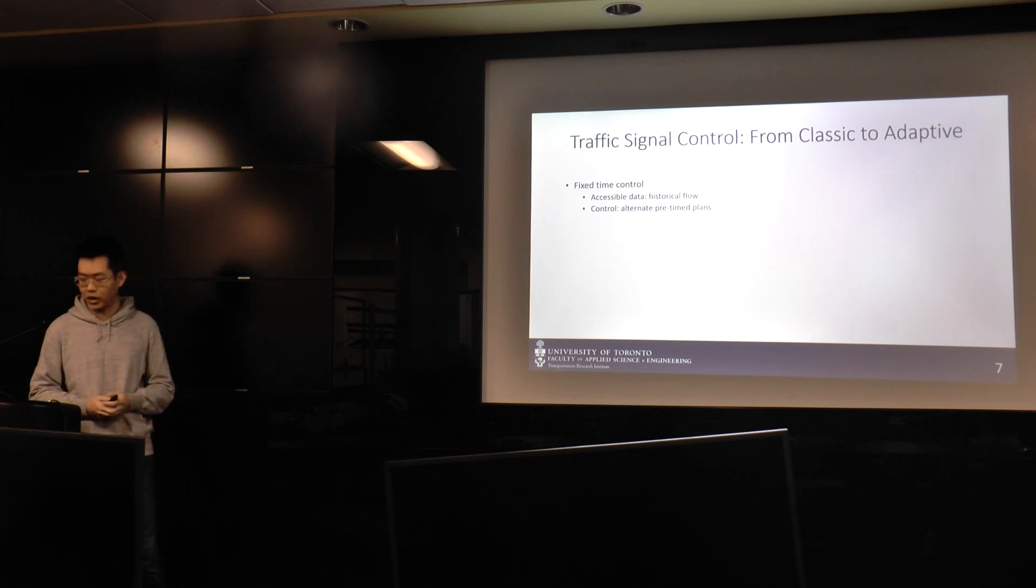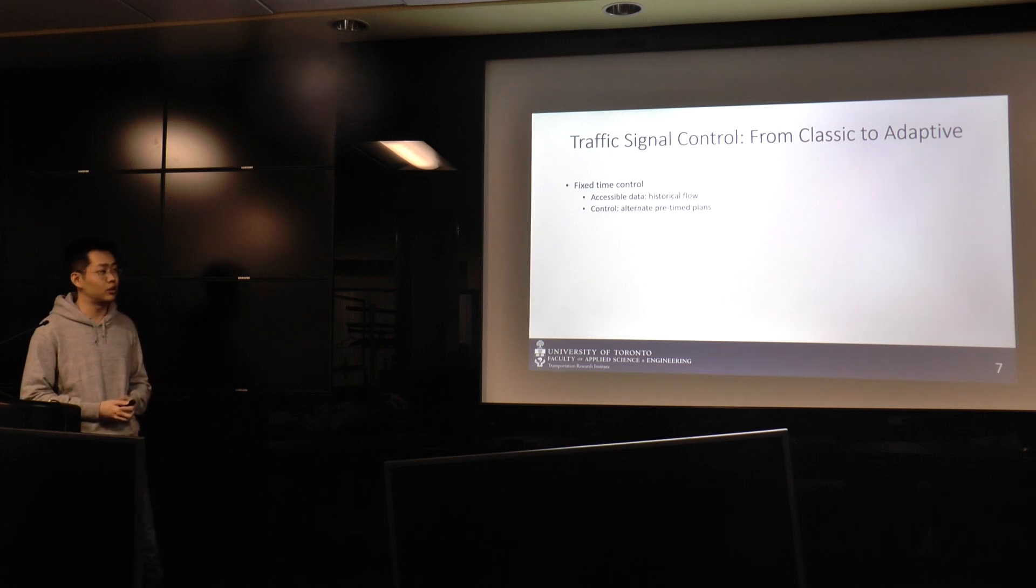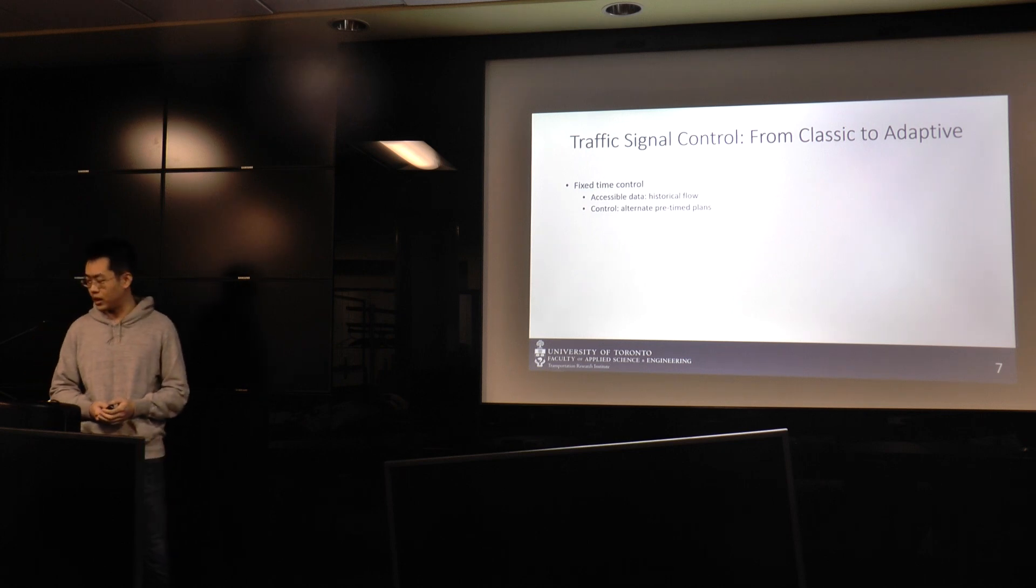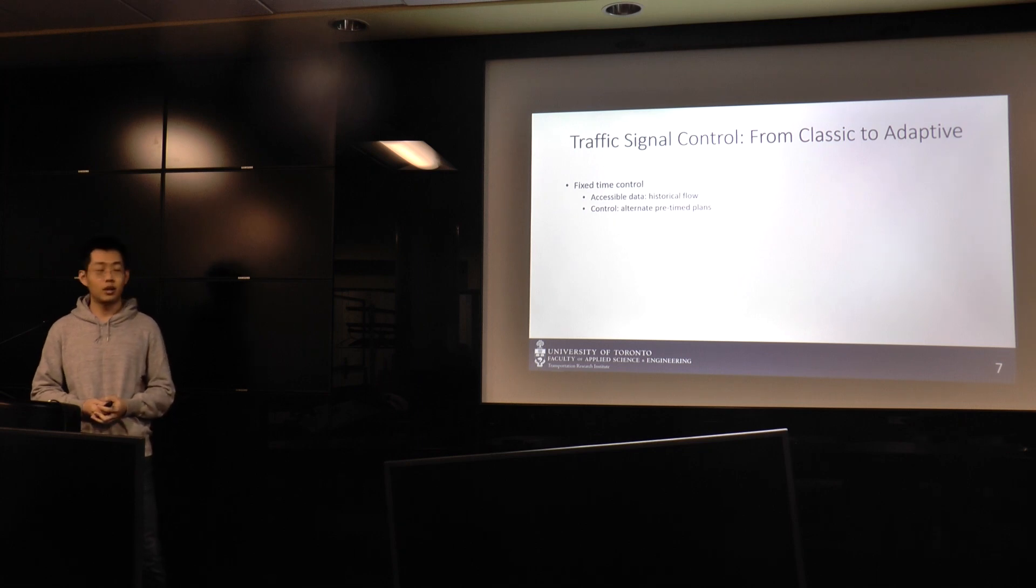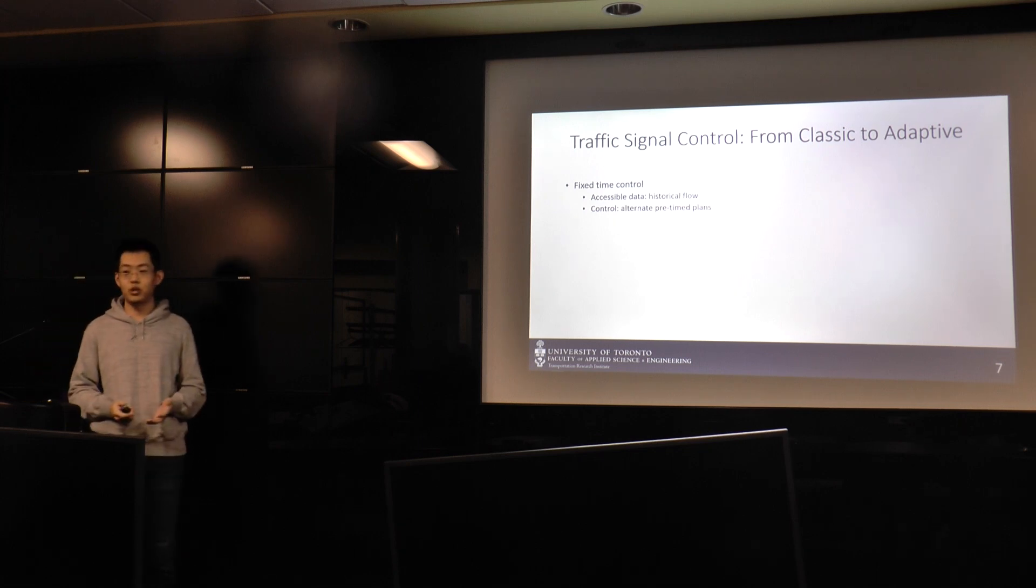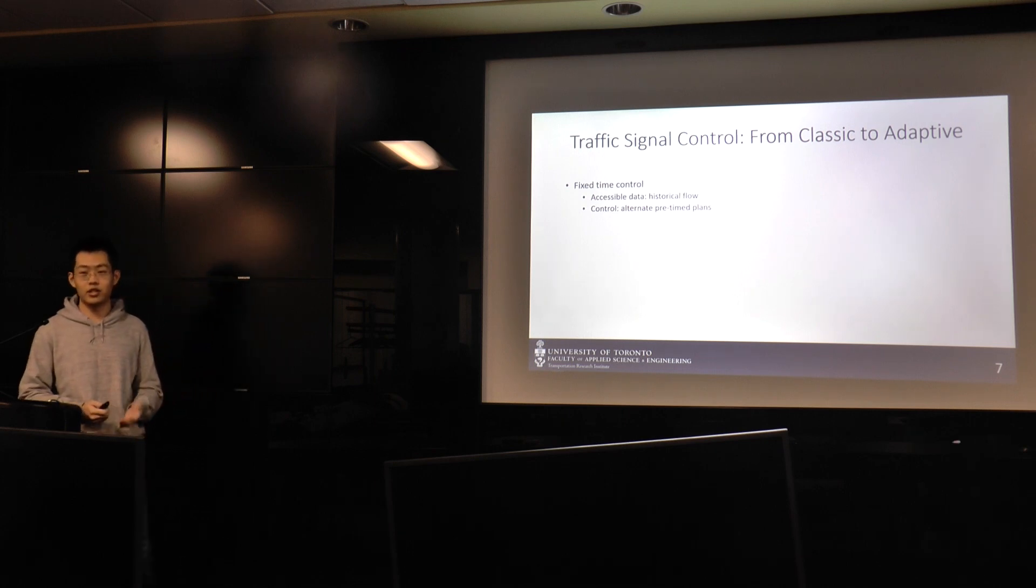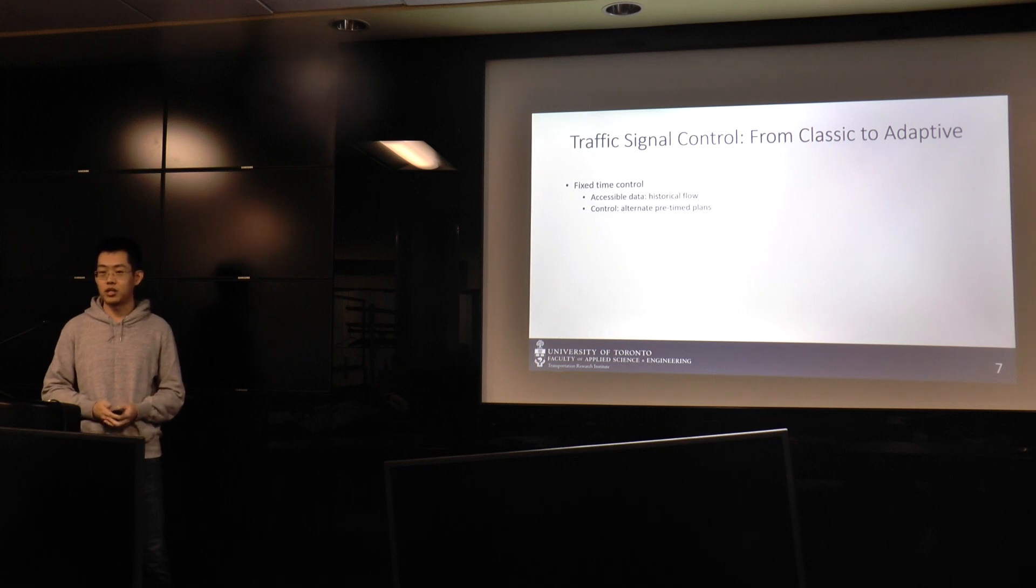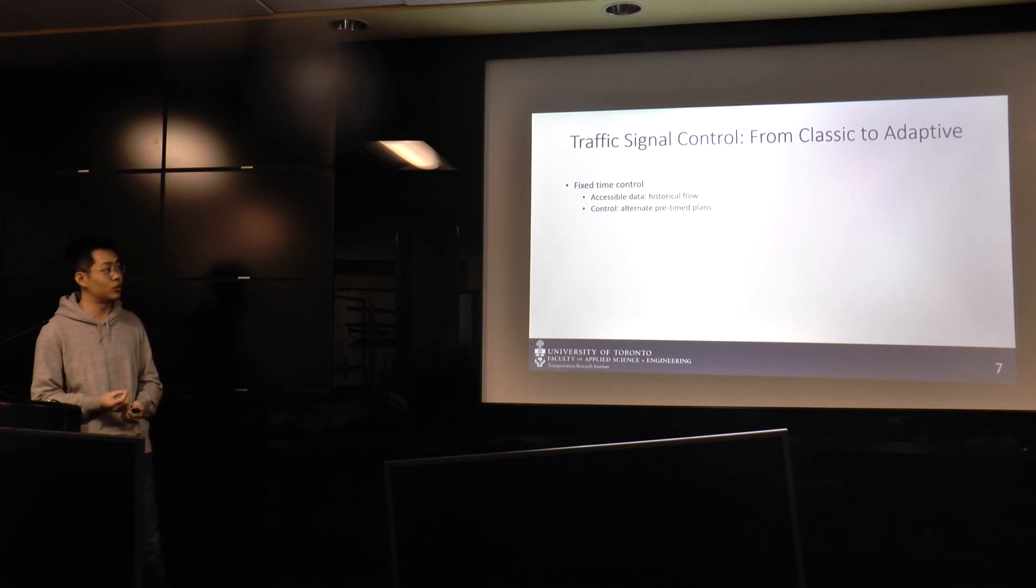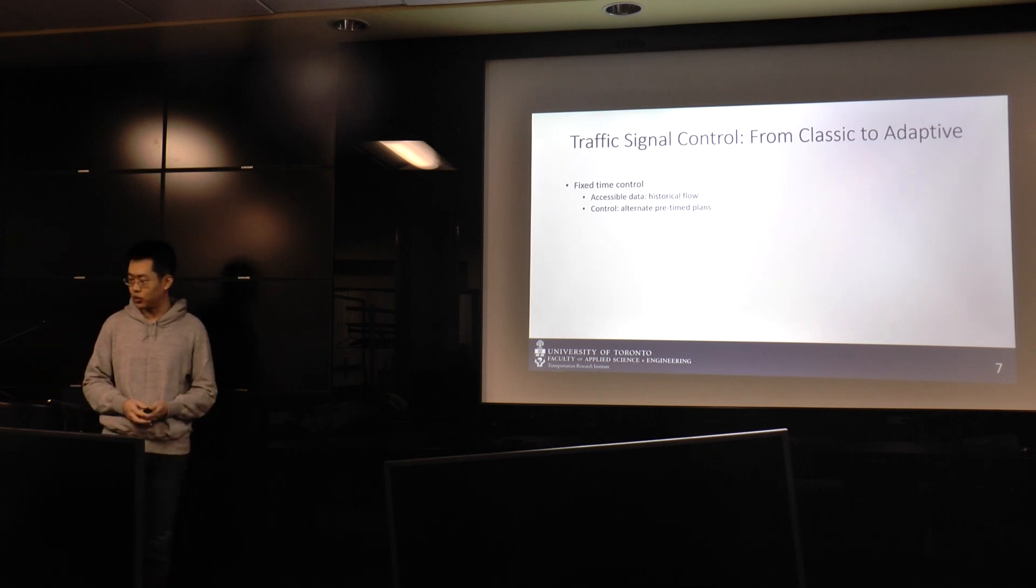In the very beginning stage, it's called fixed time control. At the old time, for example, 1950s, we can manually count the historical flow from each approach of an intersection, and the traffic engineers can design signal timing plans, and we just alternate different time plans according to the traffic flow profile we observed from the field.